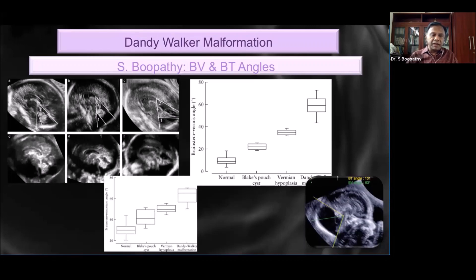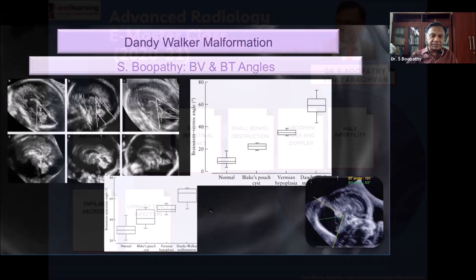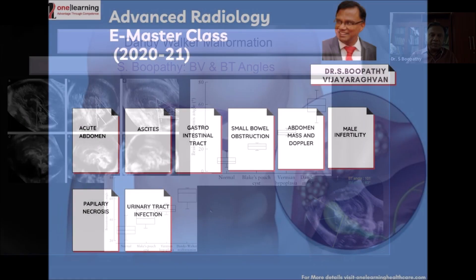The brainstem tentorium angle is used to identify or differentiate the Dandy Walker anomaly from the lesser variants. What these angles have done is bring objectivity to describing and differentiating these three conditions. Thank you.